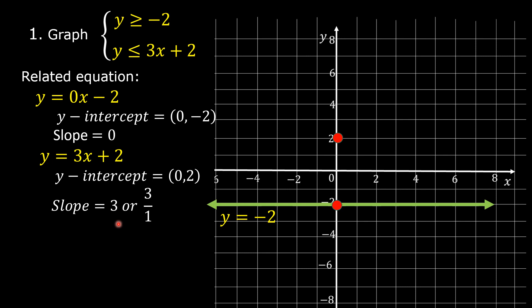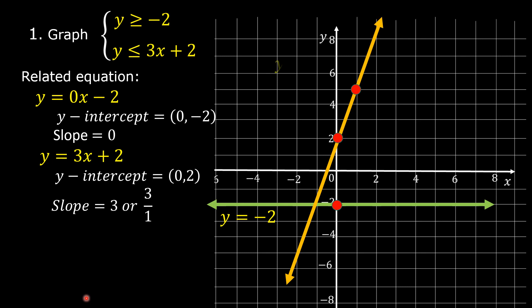The slope is positive 3, or positive 3 over 1, and we know that slope is rise over run. So we are going to rise or move upward 3 units, and then since the slope is positive, we are going to move horizontally 1 unit to the right. 1, 2, 3, and then 1. This is the point. Since the symbol of inequality in the second linear inequality is less than or equal to, then we are going to draw a solid line through the two points. This is the graph of y is equal to 3x plus 2.